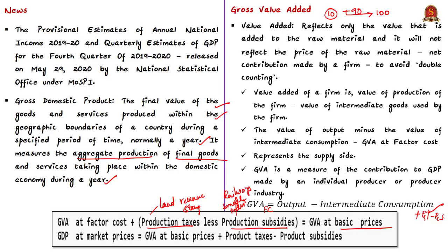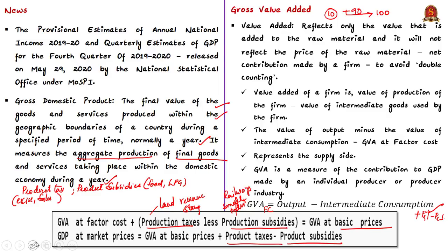After production, the product has to be sold in a market. On top of its price, an indirect tax called product tax is added. The government may also offer product subsidies. Examples of product subsidies include subsidies on food, petroleum, fertilizer, and gas cylinders; product taxes include excise duty, sales tax, and service tax. When we add product taxes and subtract product subsidies from GVA at basic prices, we arrive at the final market value of the product. Adding the final value of all goods and services in a country gives us GDP at market prices: GDP at market prices = GVA at basic prices + product taxes − product subsidies. This method is called the product method or value added method.